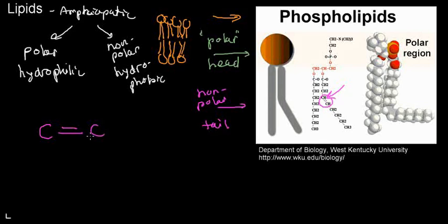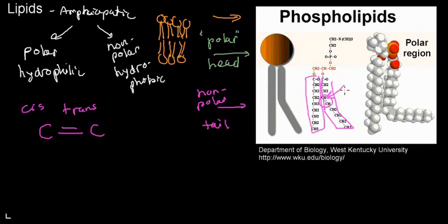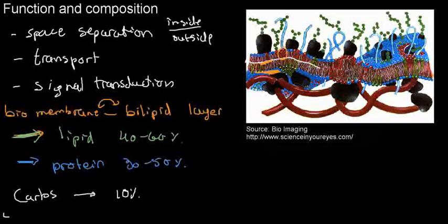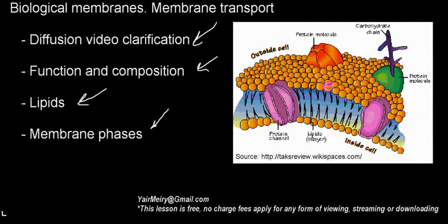Cis and trans configurations at a double bond create a kink — a little leg-shaped angle in the chain. A chain with a double bond will occupy more space because of that kink. What you really need to know is that this molecule is amphipathic: it has a nonpolar tail and a polar head. The polar heads face the inside and outside of the membrane, and in the middle the tails interact with one another.